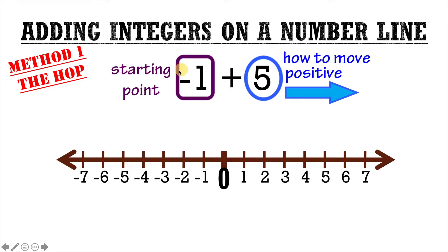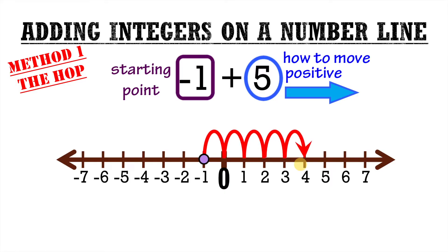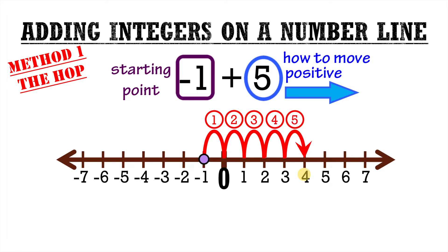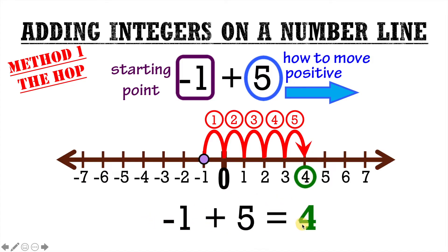To use the hop, we put a point at negative 1 since that's our starting point. From negative 1, we move 5 spaces to the right because it's a positive value — hopping 5 times and numbering each hop: 1, 2, 3, 4, 5. And since this is where we end up, our final answer is 4. So negative 1 plus 5 equals positive 4.